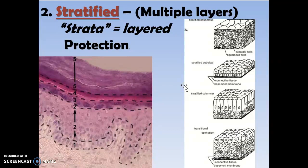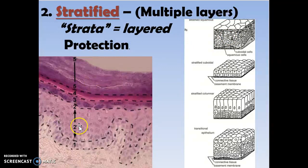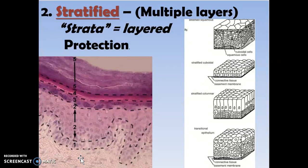Stratified means many layers. The diagram on the right — the handwritten diagram on the right — at the top, stratified squamous, is meant to look like the actual slide on the left. Your stratified squamous is up here above. One, two, three, four, five — those are the layers of the stratified squamous. All this white stuff below is connective tissue, and this is just the surface of this tissue diagram, this slide. So stratified means many layers; strata means layered, and that's for protection.